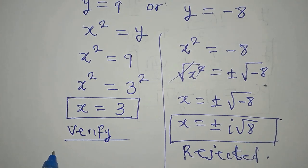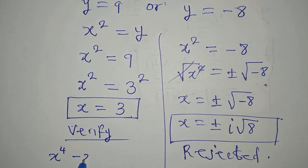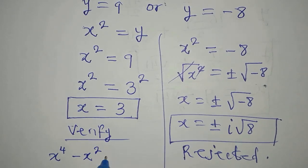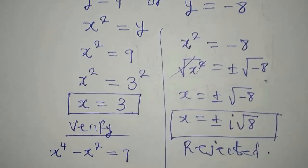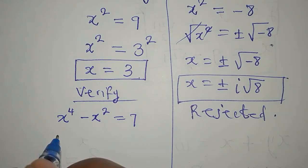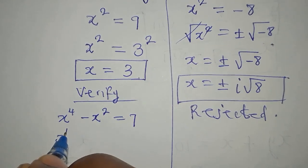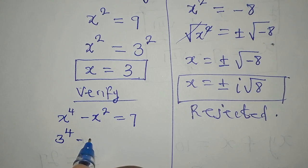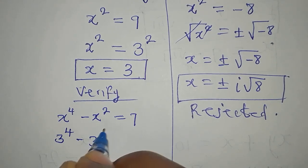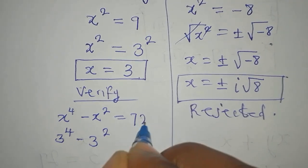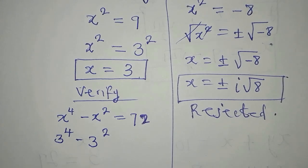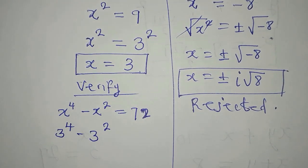The equation is x to the power of 4 minus x to the power of 2 equals 72. But now, our x is 3. So we have 3 to the power of 4 minus 3 to the power of 2. Sorry, this is 72. Will this give us 72? Let's go there.